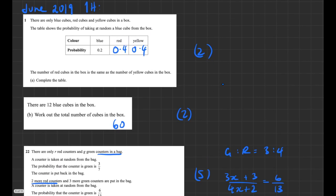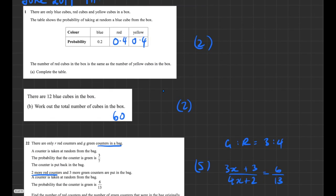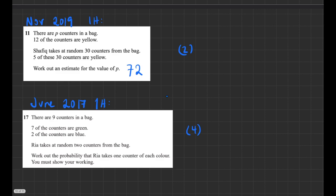From November 2019: there are p counters in a bag, 12 are yellow. Shafiq takes 30 random counters and 5 are yellow. 5/30 simplifies to 1/6, so approximately 1/6 of the counters are yellow. If 12 yellow counters represent 1/6 of the total, then the total is 12 × 6 = 72 counters.